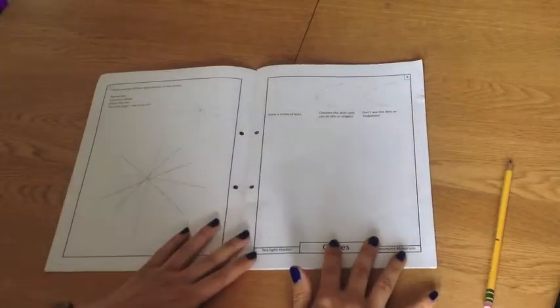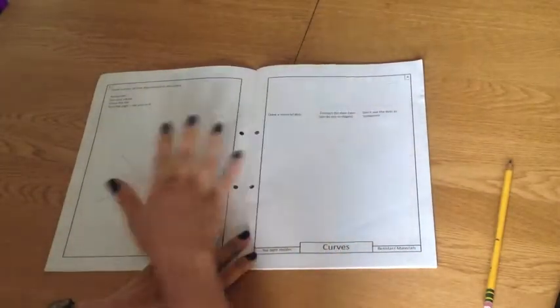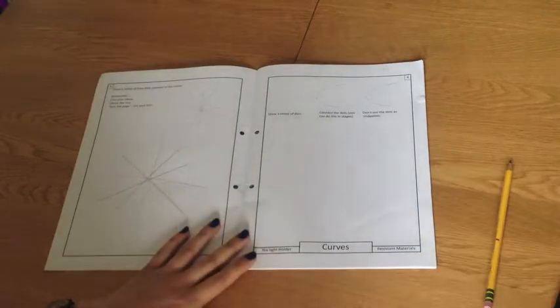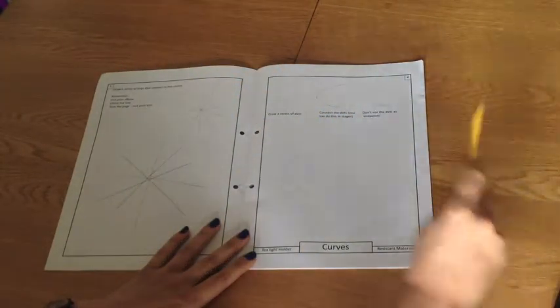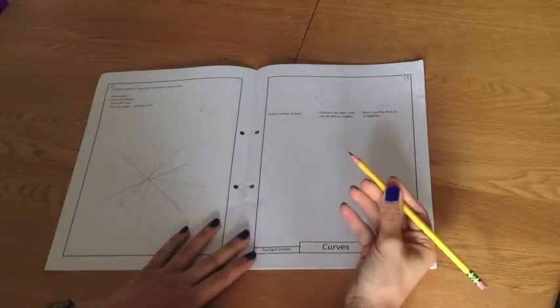The next exercise you're going to do is to try drawing curved lines instead of straight lines. Now, once again, you're going to be using your blue pencil to do this, but I'm going to be using my normal drawing pencil so that you can see what I'm doing.